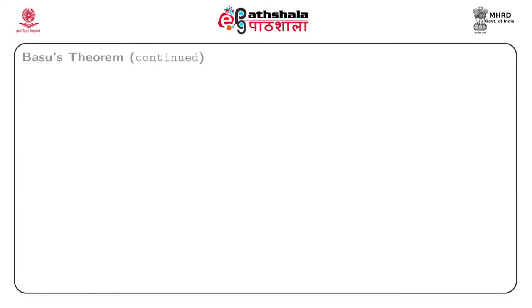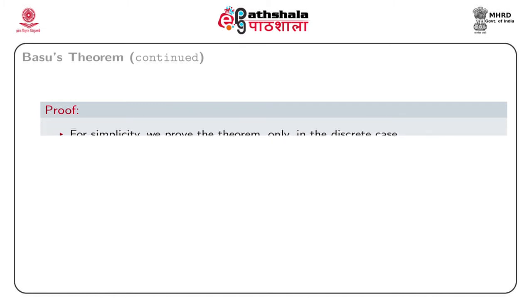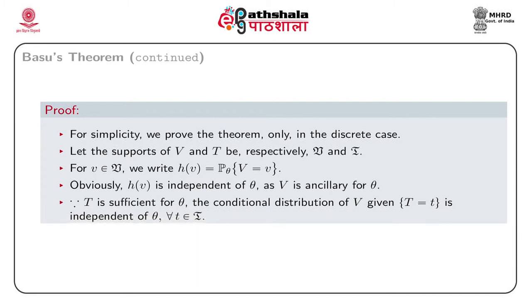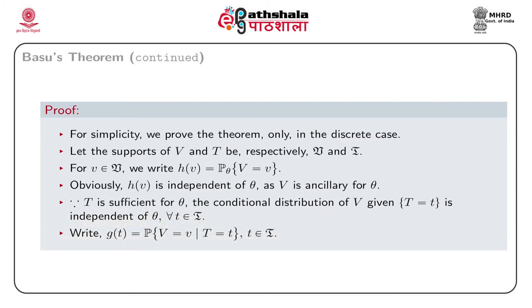Let us consider a proof of the theorem. For simplicity, we prove the theorem only in the discrete case. Suppose the domain spaces of V and T are denoted by script V and script T respectively. For any v ∈ script V, write h(v) = P_θ(V = v). Obviously h(v) is free from θ since V is ancillary for θ, and therefore the distribution of V is independent of θ. Since T is sufficient for θ, the conditional distribution of V given T = t is independent of θ for all t ∈ script T, which follows from the definition of sufficient statistic.